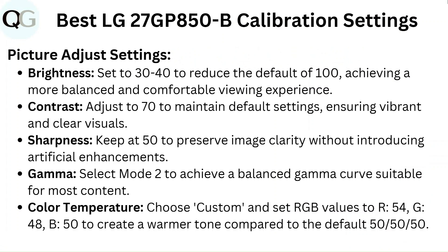Gamma — select Mode 2 to achieve a balanced gamma curve suitable for most content. Color Temperature — choose Custom and set RGB values to R54, G48, B50 to create a warmer tone compared to the default 50, 50, 50.